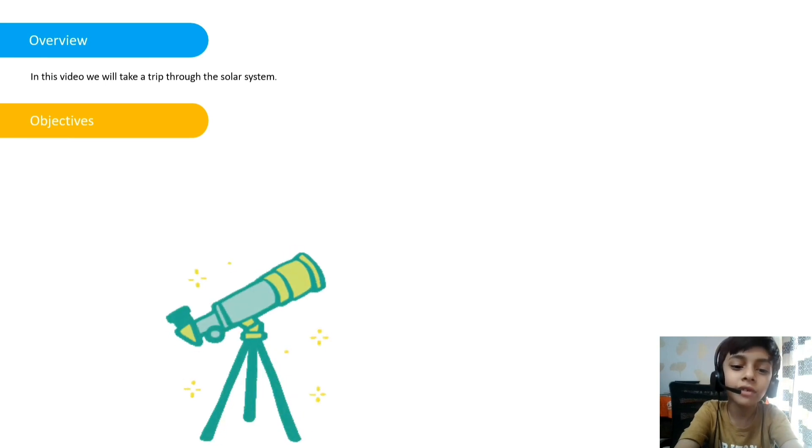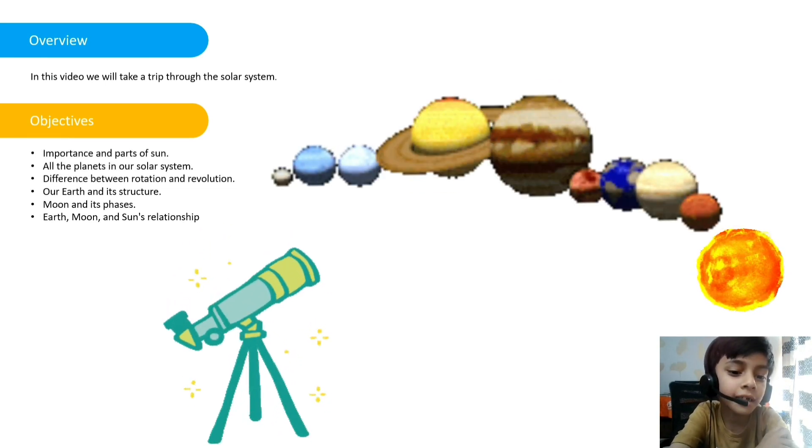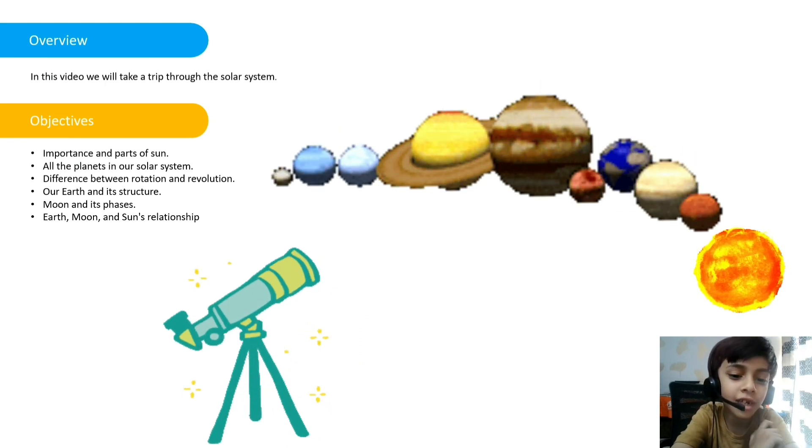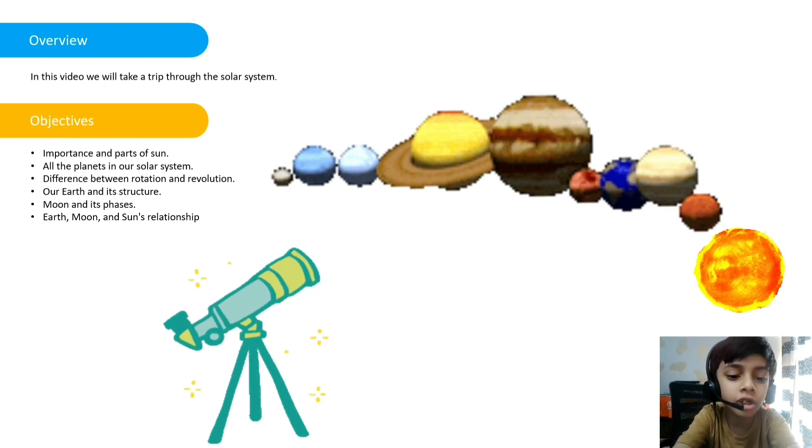The objectives covered in this video: importance and parts of the sun, all the planets in the solar system, difference between rotation and revolution, our earth and its structure, moon and its phases, earth, moon and sun's relationship.